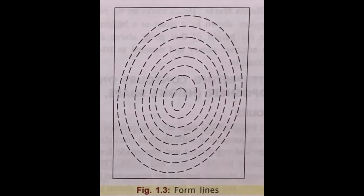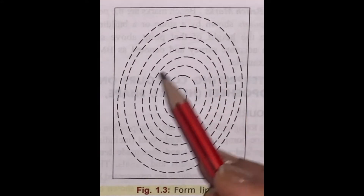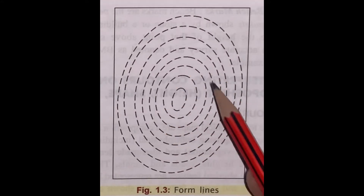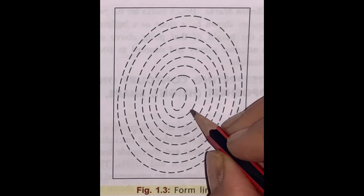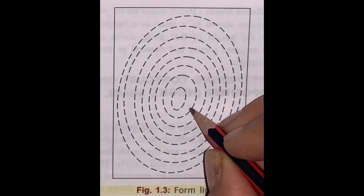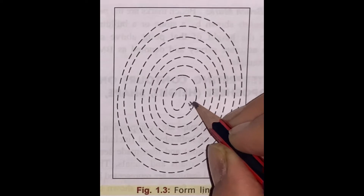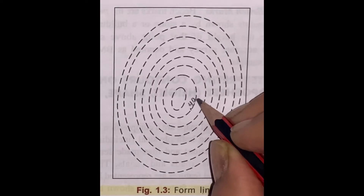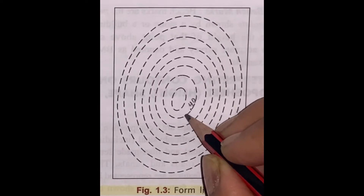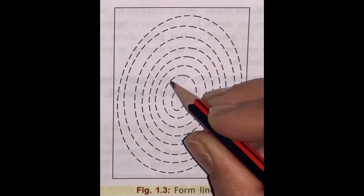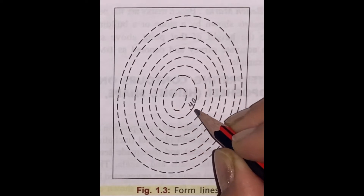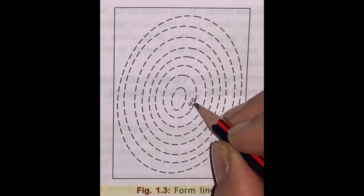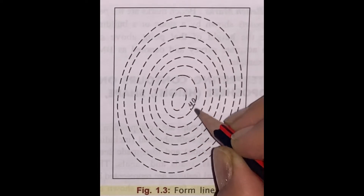Form lines show only approximate heights above sea level. For example, if it is written spot height 40, it means that all the places which fall on this contour line are 40 meters above the average sea level.